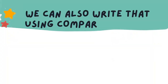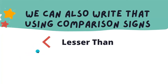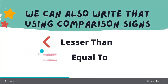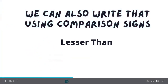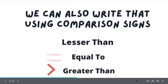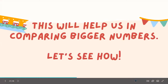We can also write that using comparison signs. Do you know what comparison signs are? Let me show you. This is called the less than sign. This is called the equal to sign. And this one is called the greater than sign — less than, equal to, and greater than. This will help us in comparing bigger numbers. Let's see how.